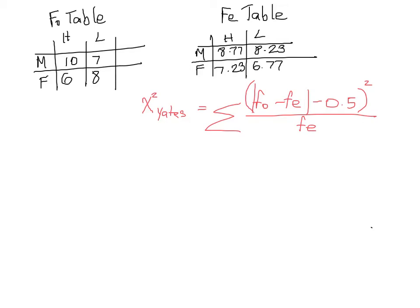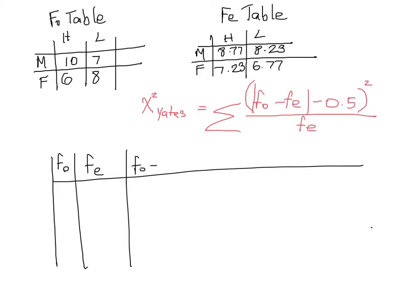So in order to calculate it we should probably use a table so we can organize all our information. We need our observed frequencies, we also need our expected frequencies. We need to first, according to our formula, subtract our expected frequencies from our observed frequencies, find the absolute value of that. Once we've done that for each set of numbers we can then subtract 0.5. So all I'm doing right now is looking at our formula and following each of the steps that are in the formula.